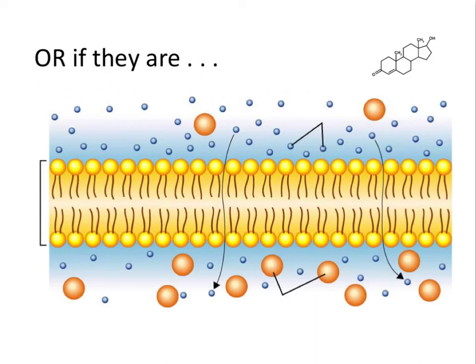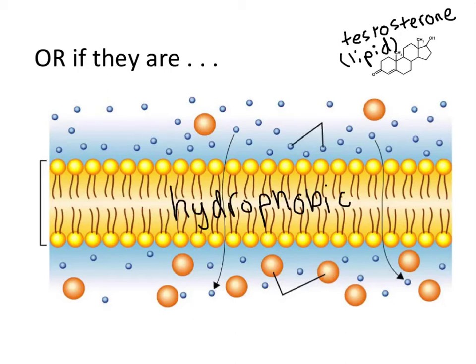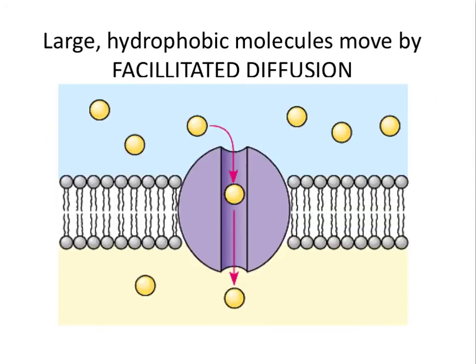Not all molecules get across just because they're small, however. Testosterone is a somewhat sizable molecule, yet it can pass across — because it is a lipid, and lipids are hydrophobic. So even though there is a hydrophobic barrier through the middle of the membrane, the testosterone molecule can still move through because it is also hydrophobic. However, if molecules are too large or if they are hydrophilic, they need to have their diffusion facilitated or made easier.